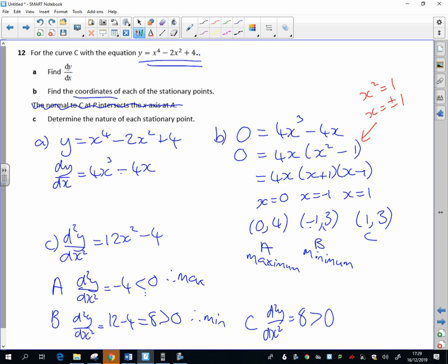And we do know what a quartic curve looks like, so just quickly in this corner I can confirm that that does make sense. So I'm saying I've got a stationary point at minus 1 comma 3, so about there, 0 comma 4, and 1 comma 3.